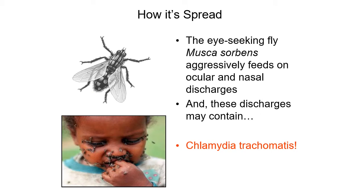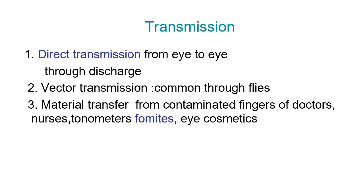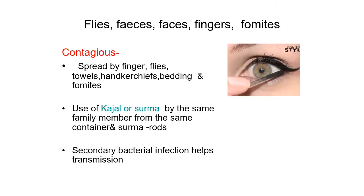The disease is spread by the eye-seeking fly called Musca sorbens, which aggressively feeds on ocular and nasal discharges that may contain Chlamydia trachomatis. Transmission occurs by direct transfer from eye to eye through discharge, vector transmission through flies, and material transfer from contaminated fingers of doctors and nurses, tonometers, fomites, and eye cosmetics.